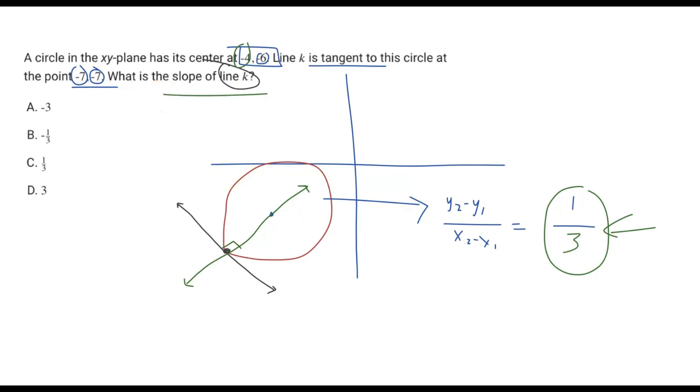So what is the slope of line k? We just need to take the opposite reciprocal, which is negative 3. Therefore, the answer choice is A. That's how you do the problem. Make sure you check out our other SAT math videos, and thank you for watching.